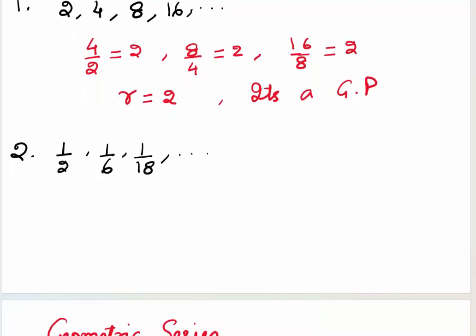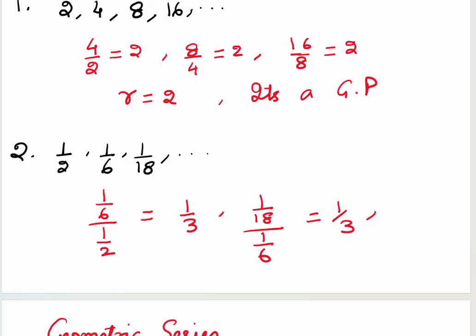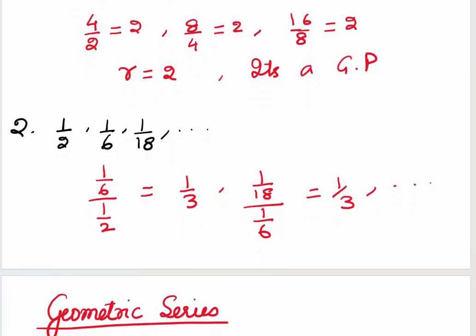Come to the second example. Here we take the ratio of 1/6 and 1/2 — this is 1/3. Take the ratio of 1/18 and 1/6 — this is also 1/3. You will see it is the same throughout. The r value here is 1/3. It's a geometric progression, because the ratio of consecutive terms is the same all over.